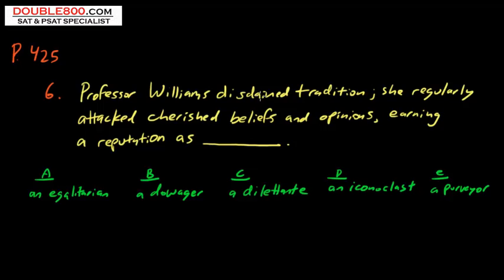We want to look through the key words and then predict the answer before we look at the choices. She hated or disdained tradition—strong dislike. Another word you see on the test a lot for that is contempt. So she strongly disliked tradition. And then we have further confirmation of that dislike. She regularly attacked cherished beliefs and opinions, earning her reputation as blank.